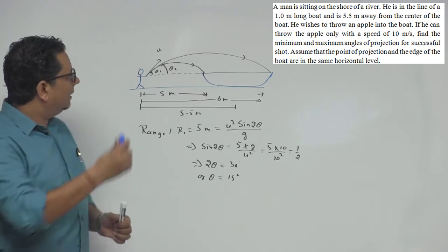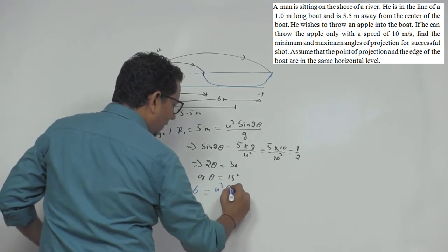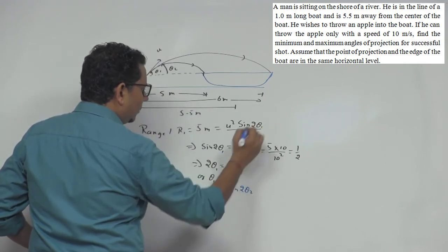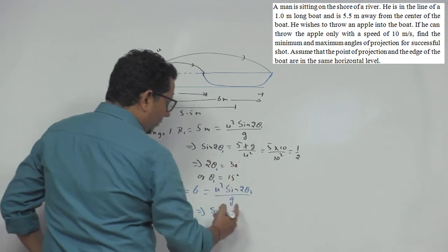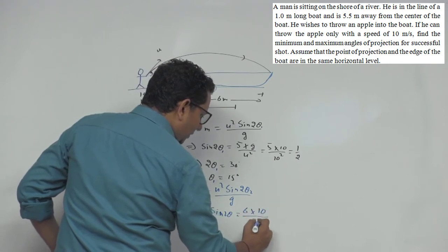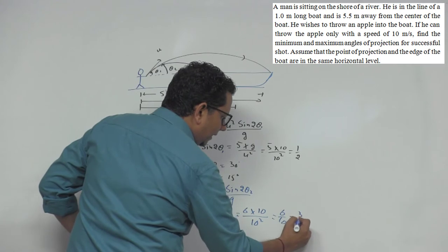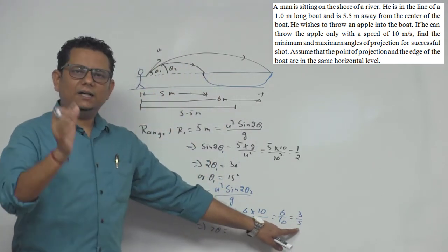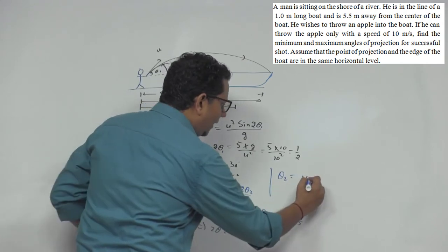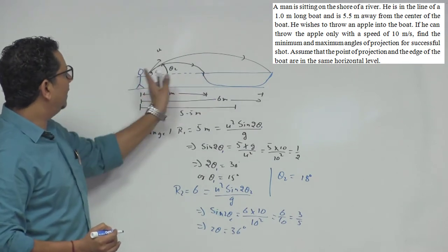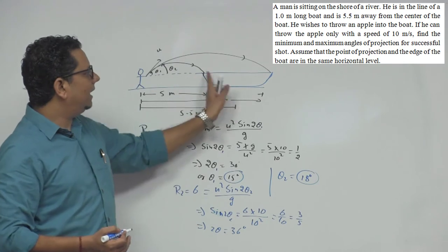So at 15°, this edge is reached. If you throw slightly more than 15°, the apple will drop inside the boat. Now in the second case, Range 2 is 6 meters. So R2 = 6 meters. Applying the same formula: u² sin(2θ₂) / g, which implies sin(2θ₂) = 6 × 10 / 10² = 6/10 = 3/5, approximately 37°, and for easy calculation we take 2θ₂ = 36°, so θ₂ = 18°.